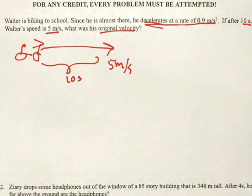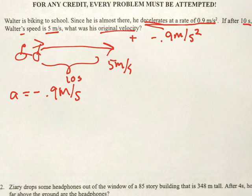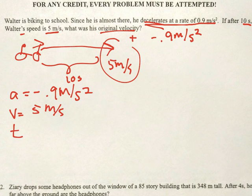Alright, so let's draw a picture. I'm going to draw a terrible bike. So this bike, with Walter on it of course, is going forward. But he's slowing down, right? He's getting slower. So after 10 seconds have passed, he is now going 5 meters per second.